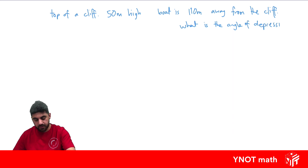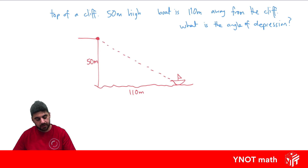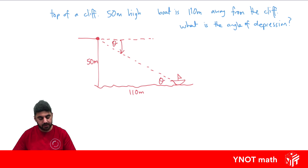In order to do this we're going to need to draw a diagram first. Let's draw our cliff, the water, and a boat. The cliff is 50 meters high, and the boat is 110 meters away. We're at the top of the cliff looking down at the boat, and we're after the angle of depression. Remember, it's not the angle in the triangle — it's the angle from the horizontal. So let's draw a horizontal line out, and it's the angle down from the horizontal. The angle of depression always equals the angle of elevation from the bottom, so it's the same angle as the one down at the base.